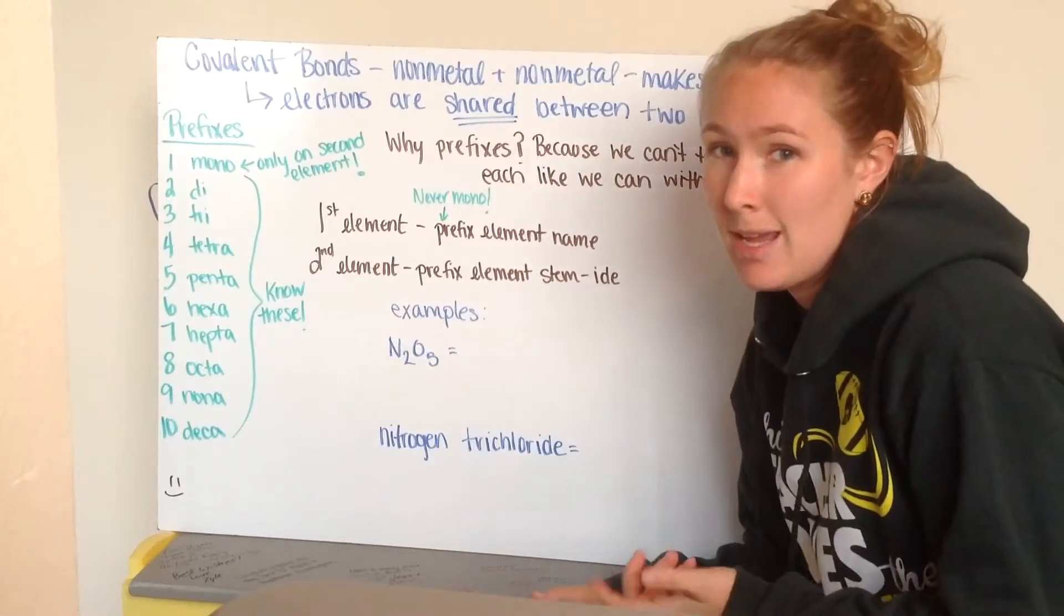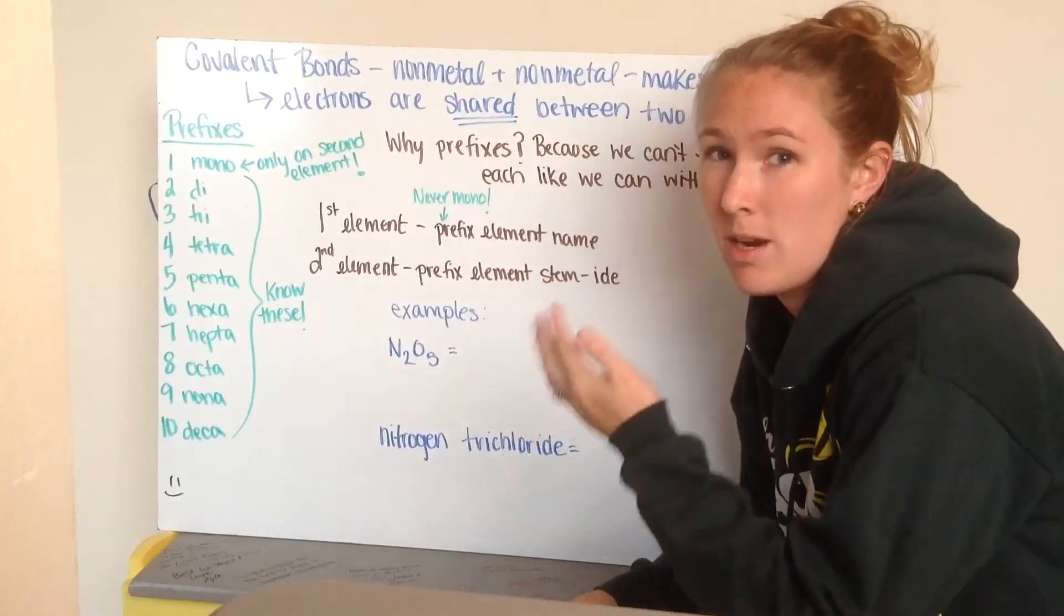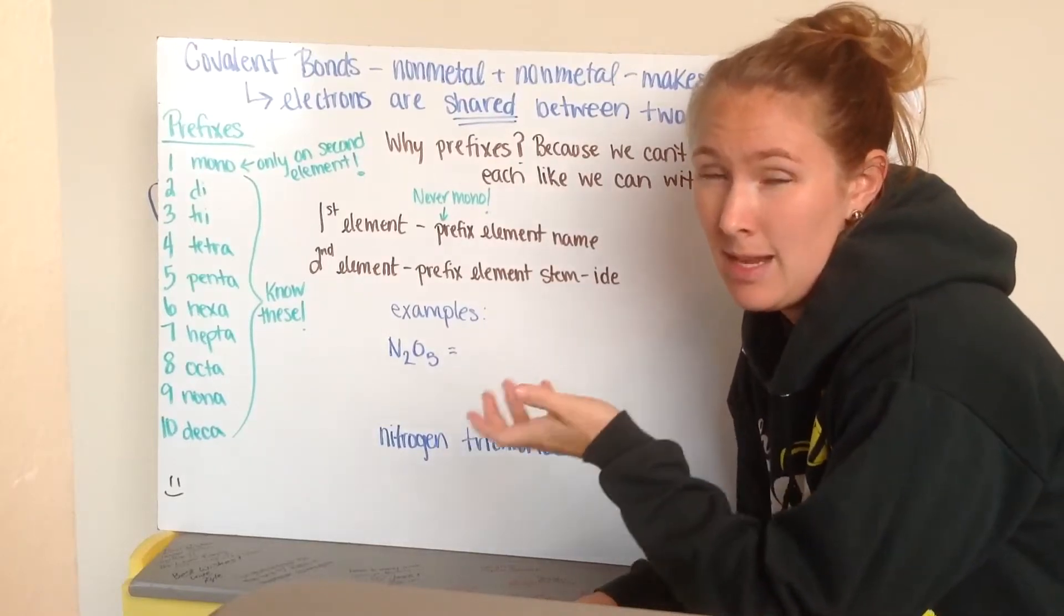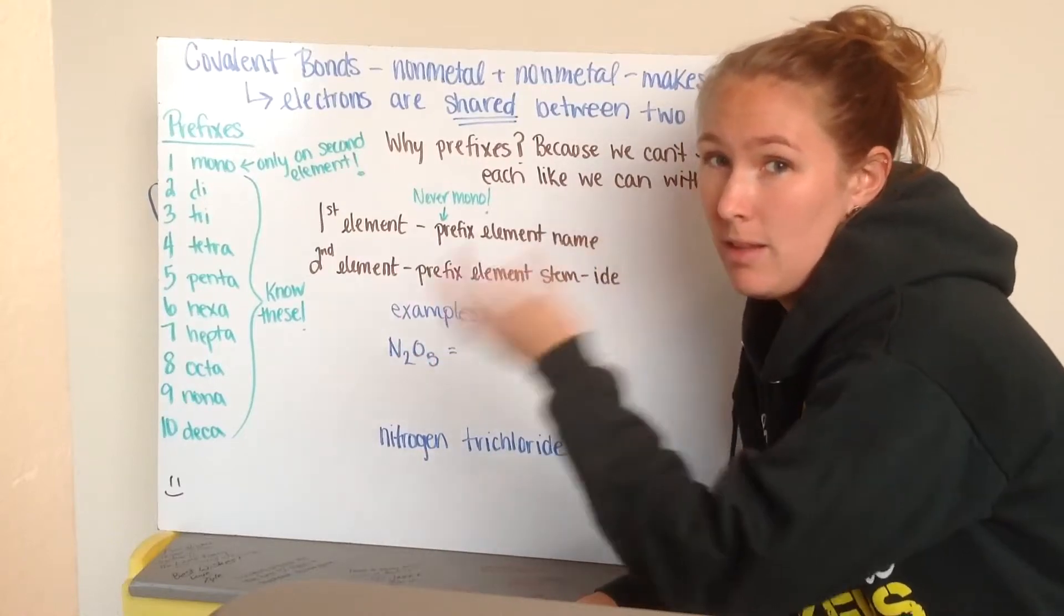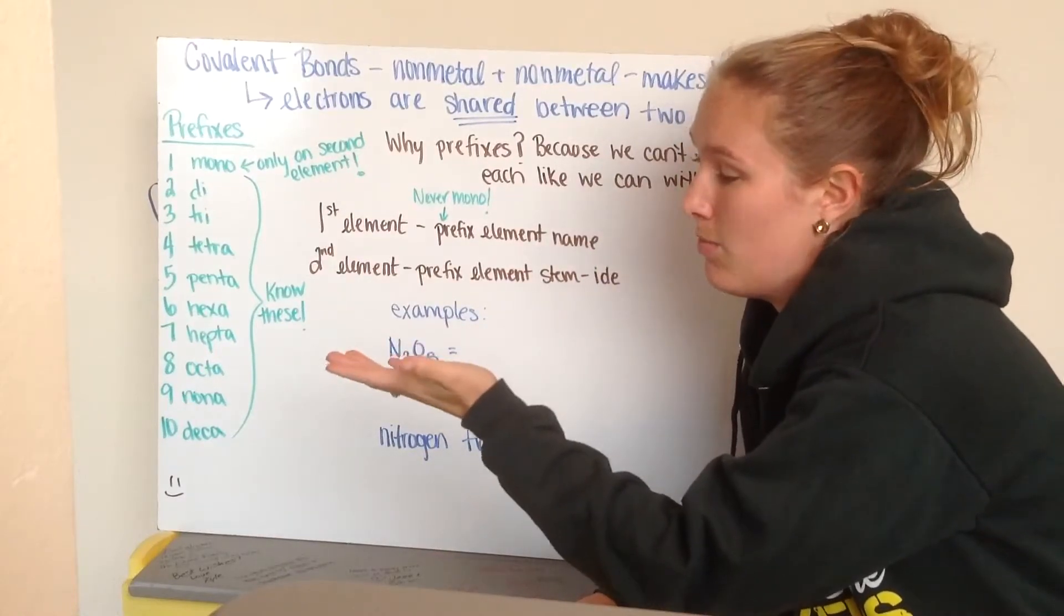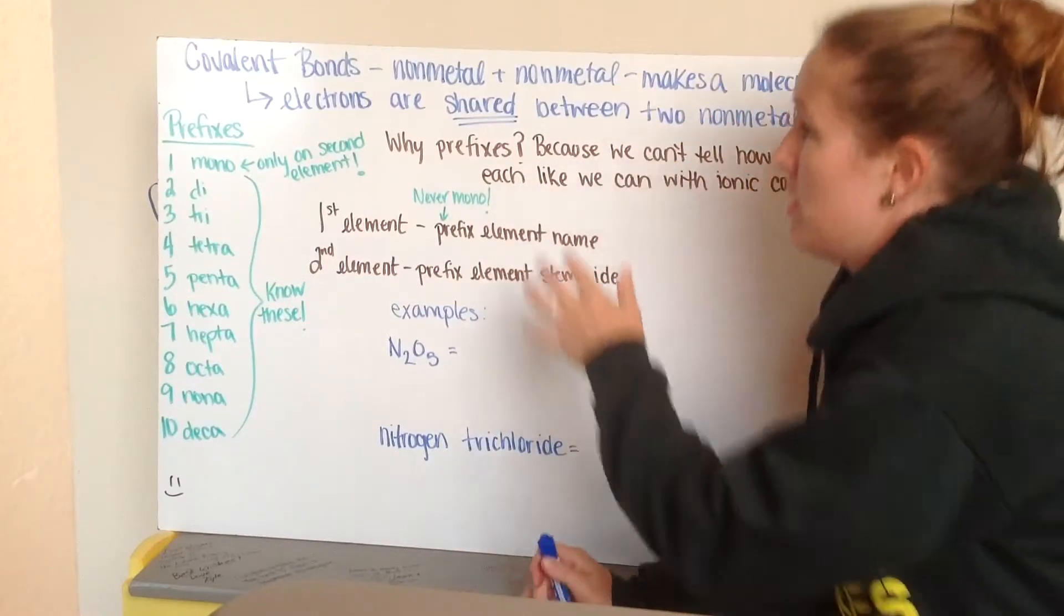Remember, with ionic compounds, our metal and non-metal each have their respective charges because our metal, the cation that it forms, is going to form that cation because it will have taken its electrons and they will have been donated to the anion. Here, that doesn't happen. They're simply shared.